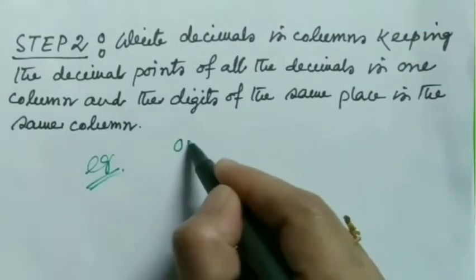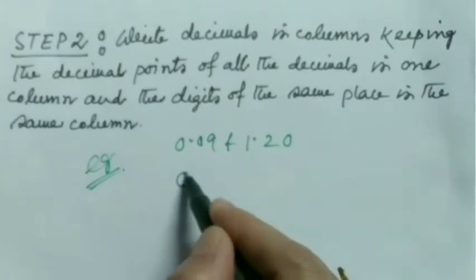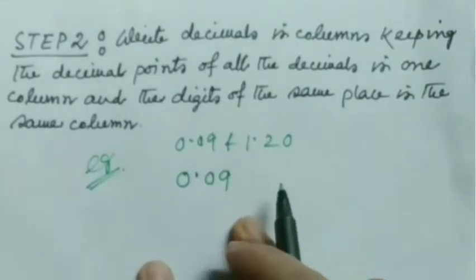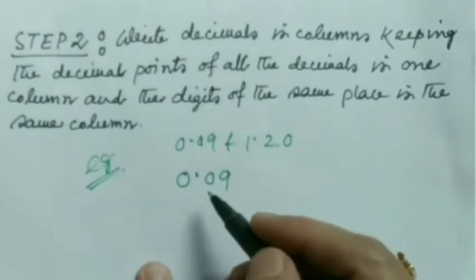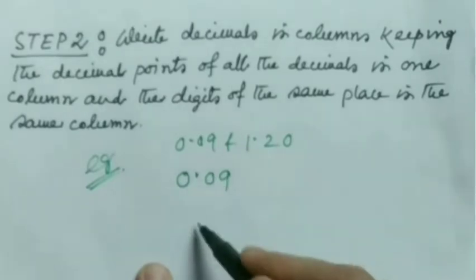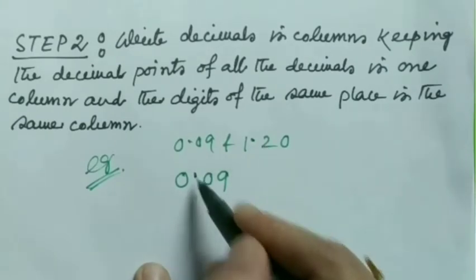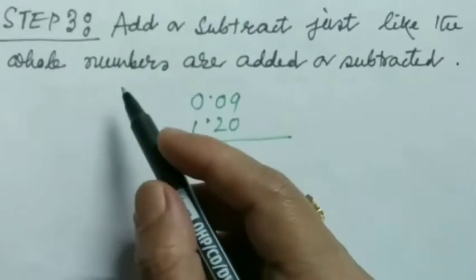0.09 and 1.20. Now I will write first number, first digit. And now I will have to write other numbers by putting all the decimal points in the same line, in the same column. So 1.20, I'll think of putting this decimal point below this decimal point here, so I'm putting here.